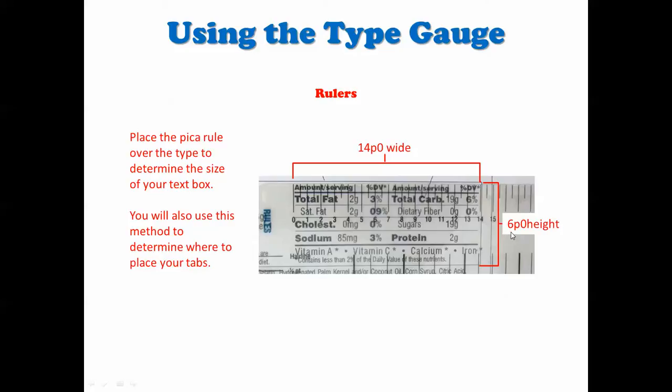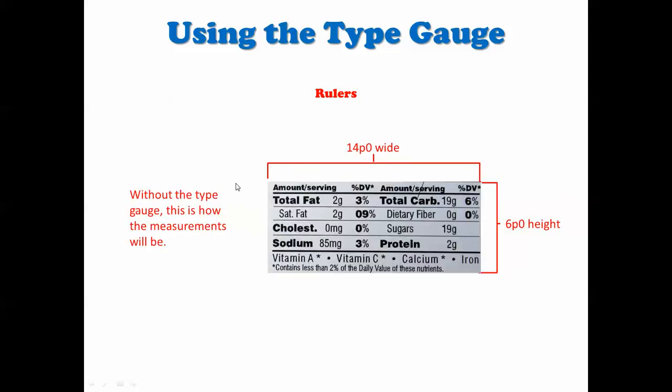And it measures 14 picas zero points wide, and the height here, or the depth, is six picas zero points. Okay, so now without the type gauge over it you can see what the size is.